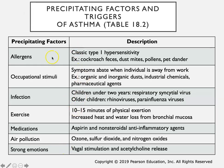Examples of precipitating factors include allergens, occupational stimuli, infection, exercise, medication, and air pollution. Occupational stimuli means asthma is only precipitated by exposure to occupational stimuli - when the individual is not at work, they're not having these symptoms. There is also exercise-induced asthma. We can basically categorize the type of asthma based on what types of factors will precipitate that asthma episode.